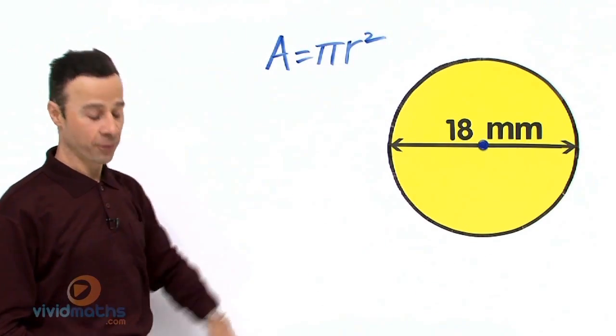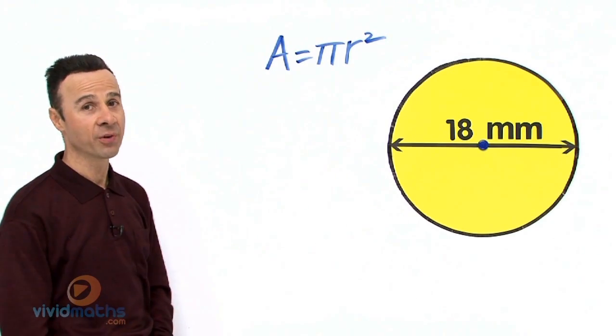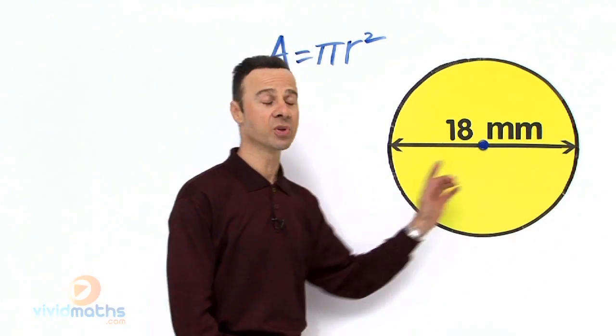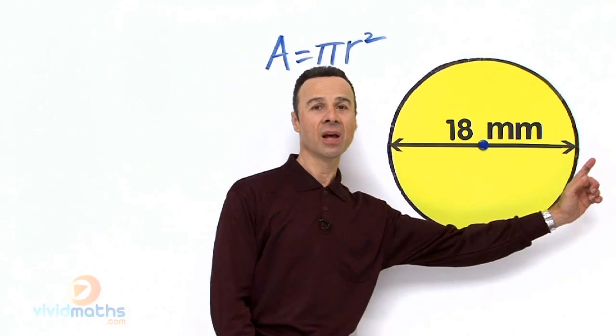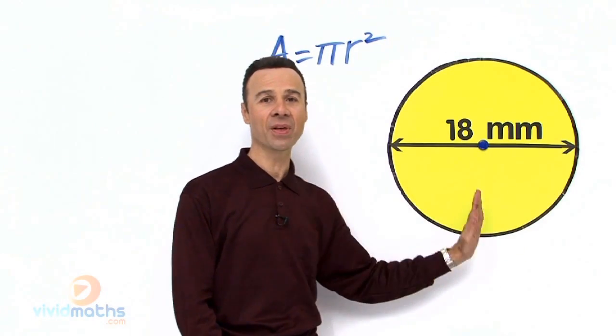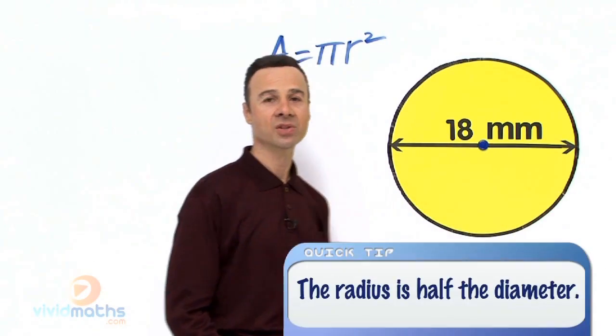Okay, they are asking for R for radius and we don't have radius, we have diameter which is from one edge all the way to the other edge 18mm. We need to half that to get the radius, so let's do that now.